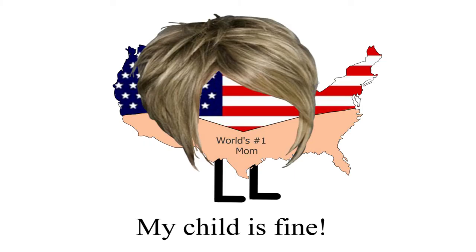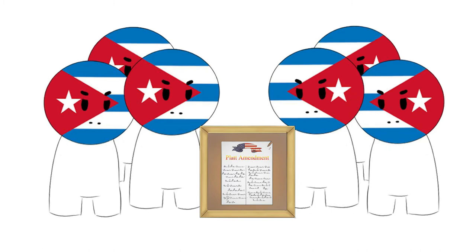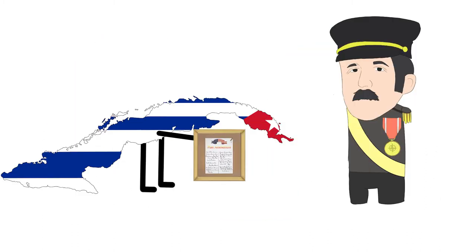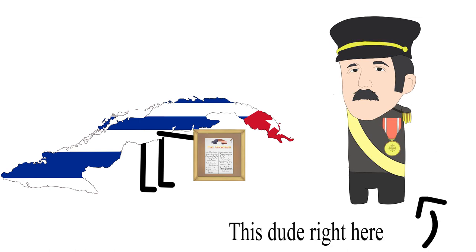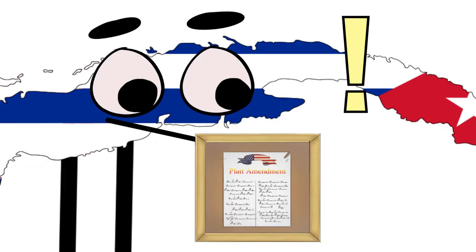It also demanded the sanitation of the cities of the islands be improved — just like an overbearing parent would do. Although the United States intervened militarily in Cuba only twice, in 1906 and 1912, Cubans generally considered the amendment an infringement on their sovereignty. When the terms of the Platt Amendment were presented to delegates of the Cuban Constitutional Convention in late 1900 by General Leonard Wood, Commander of the U.S. Occupation Forces and Military Governor of Cuba, they originally refused to include it within their constitution.